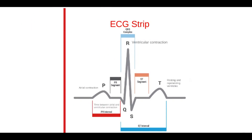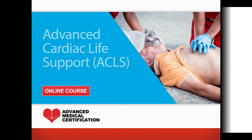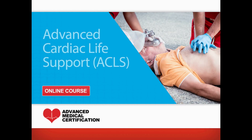The atria repolarize also, but this coincides with the QRS complex, and therefore cannot be observed on the ECG strip. Together, a P wave, QRS complex, and T wave are indicative of normal sinus rhythm, or NSR. This concludes the anatomy and physiology of the heart.